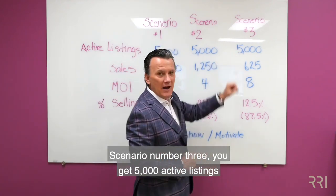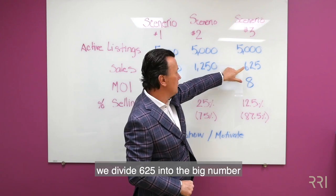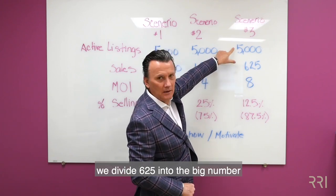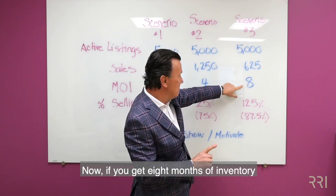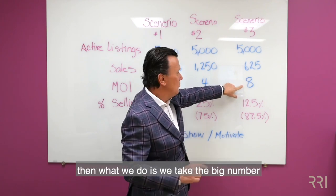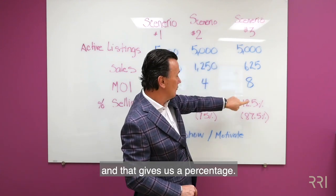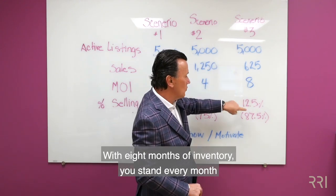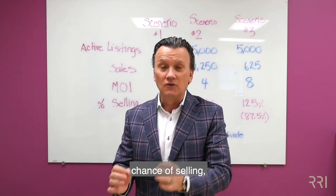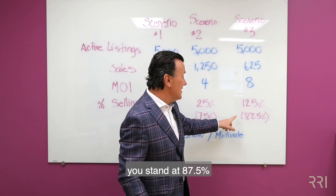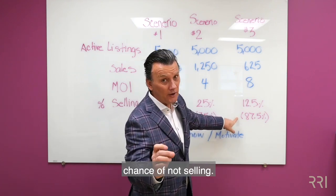Scenario number three: you get 5,000 active listings and 625 sell. We divide 625 into the big number and we get eight months of inventory. With eight months of inventory, you take the big number and divide it into the small number, and that gives you a percentage. With eight months of inventory, you stand at a 12.5% chance of selling every month, which also means you stand at an 87.5% chance of not selling.